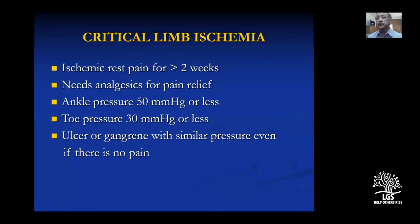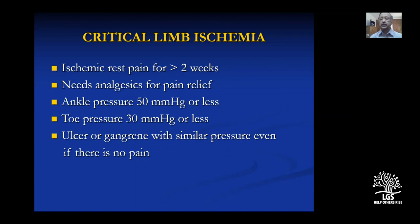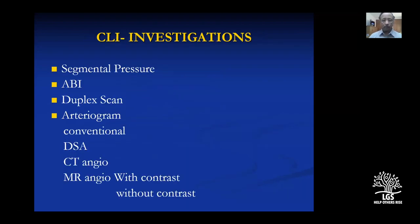Critical limb ischemia is defined as ischemic rest pain for over two weeks requiring analgesia for pain relief. Ankle pressure will be 50 mmHg or less, and toe pressure 30 mmHg or less. For diabetic patients these pressures can be slightly higher — 70 mmHg for ankle and 50 mmHg for toe — because limb vessels are calcified in diabetes, making pressure readings falsely high despite reduced flow. Critical ischemia is a semi-emergency requiring revascularization.